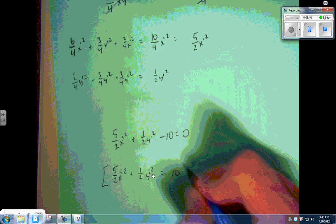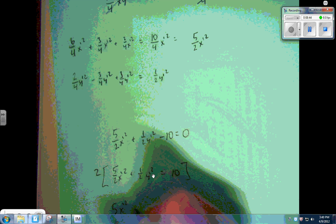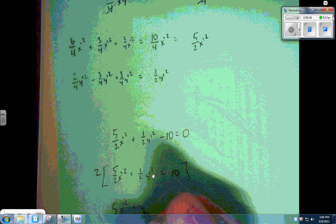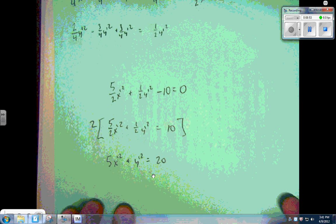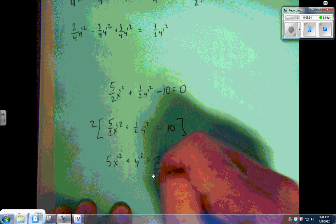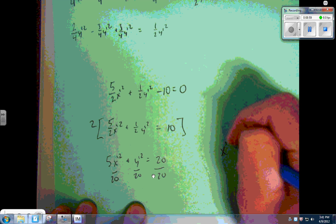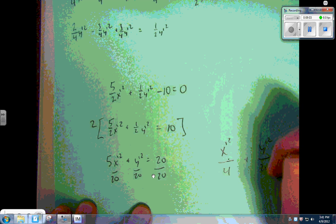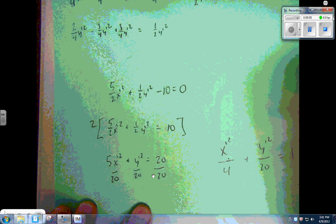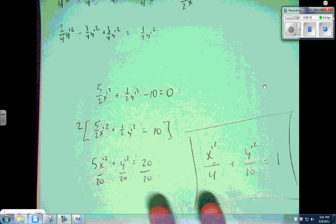What I'm going to do is take this entire thing, multiply by two, to get rid of those fractions. Gets us to here. Divide by twenty. And what you end up with is x' squared over four plus y' squared over twenty equals one. That's the ellipse we were hoping for when we started.